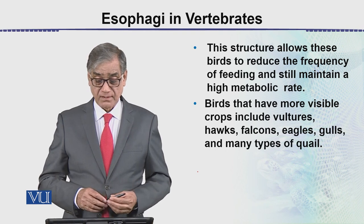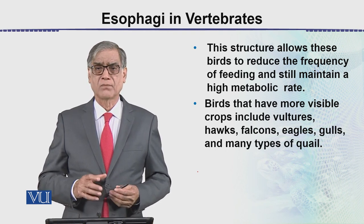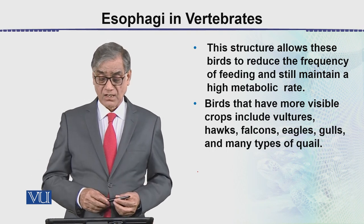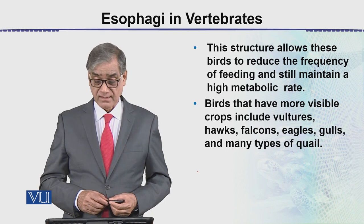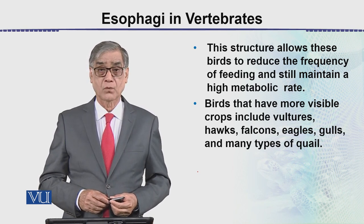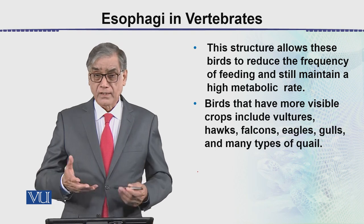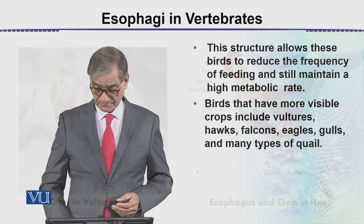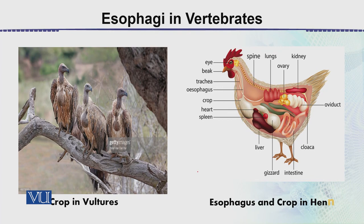Birds that have more visible crops include many types, including even the hen, a domestic animal. In this diagram we can see vultures with very evident crops. This is the esophagus — the tube — and this is the crop where food is stored directly.